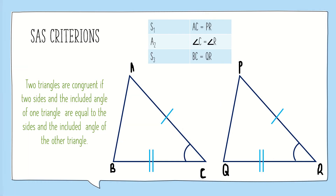Now let's move on to the second criterion, that is the SAS criterion, which states that two triangles are congruent if two sides and the included angle of one triangle are equal to the sides and the included angle of the other triangle. As we can see in the figure, AC is equal to PR, angle C is equal to angle R, and BC is equal to QR. Hence the two triangles are congruent.